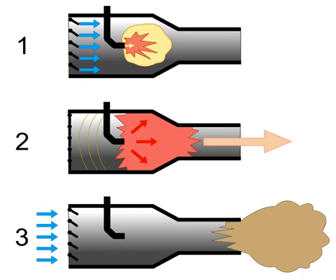However, pulsejets are used on a large scale as industrial drying systems, and there has been a resurgence in studying these engines for applications such as high output heating, biomass conversion, and alternative energy systems, as pulsejets can run on almost anything that burns, including particulate fuels such as sawdust or coal powder. Pulsejets have also been used to power experimental helicopters, with the engines attached to the ends of the rotor blades.